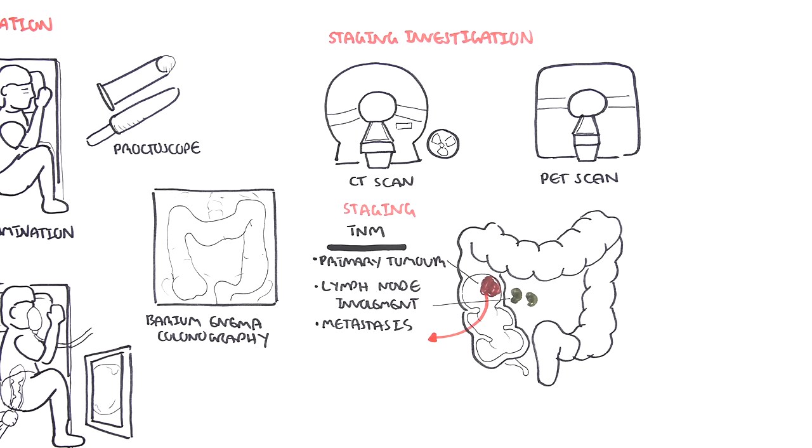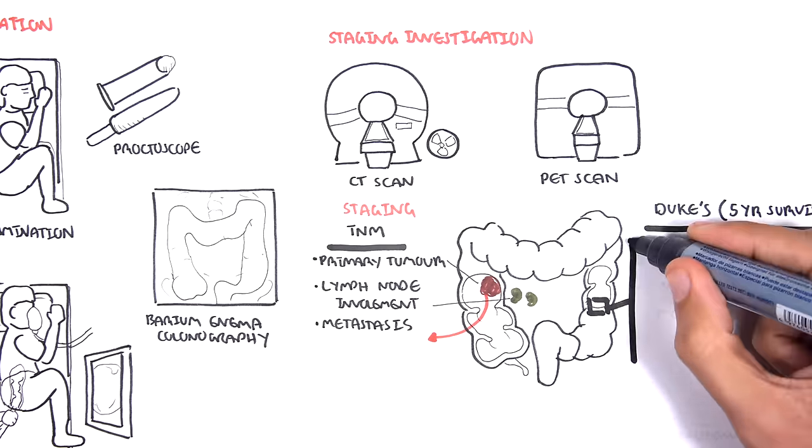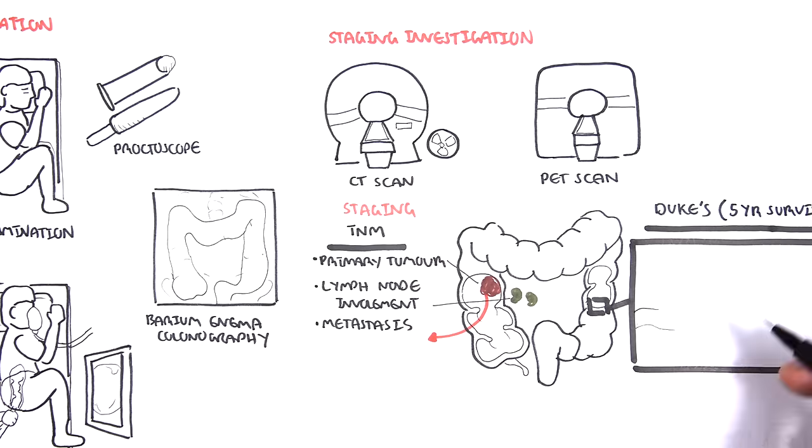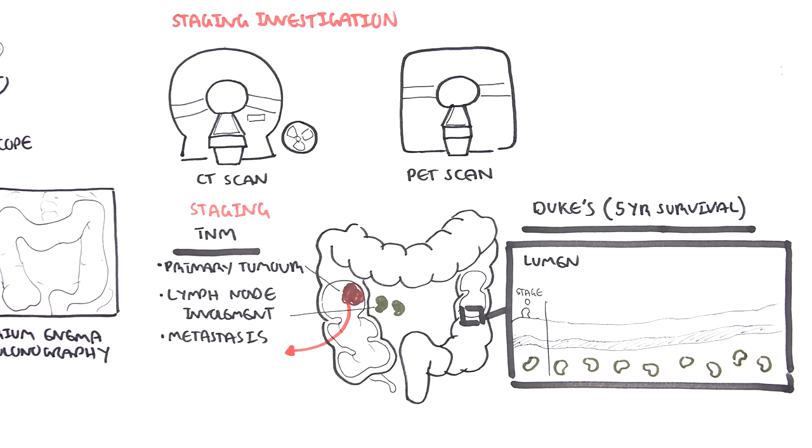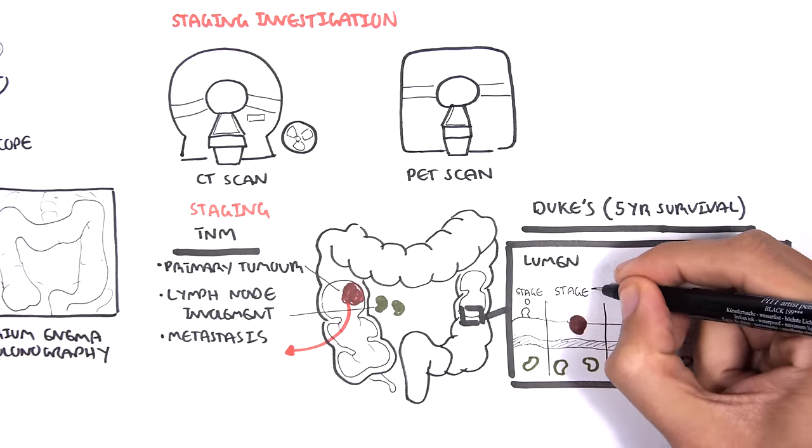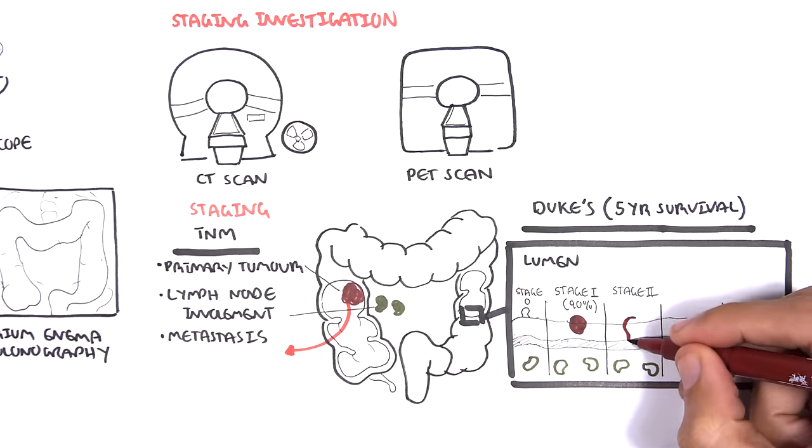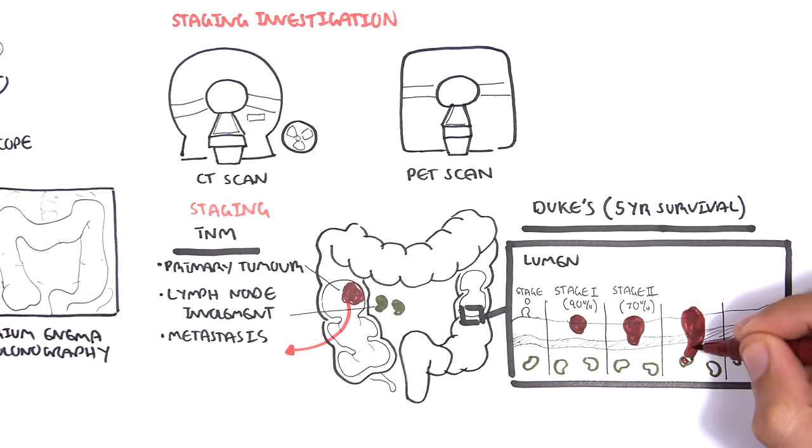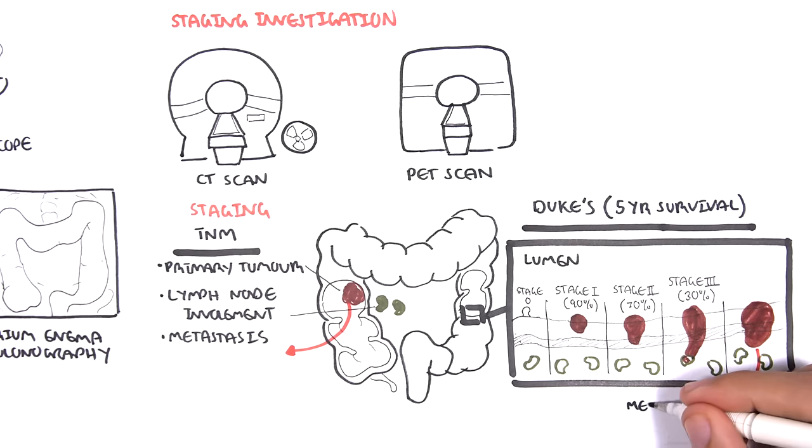The second form of staging is Duke staging, which looks at the five-year survival. And there are a total of four stages, plus stage zero. Stage zero is nothing really, and benign. The remainder of the stages, it depends on how deep the tumor is going, so what layers it's going into, and if it has metastasized. Stage zero, there's a 90% five-year survival. Stage two, the tumor is growing even deeper, 70% five-year survival. Stage three, about 30%. Stage four, it's less than 10% five-year survival with metastasis.